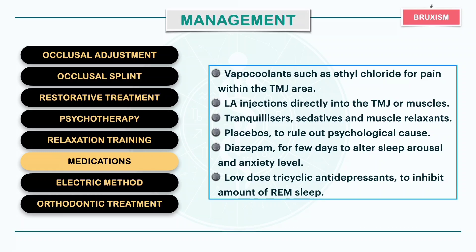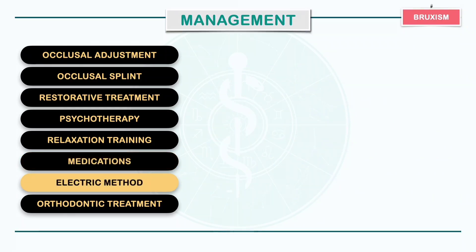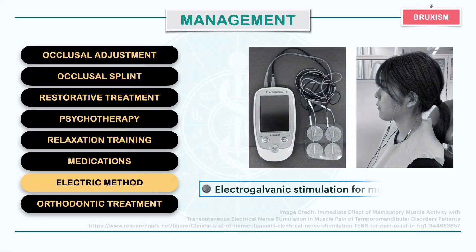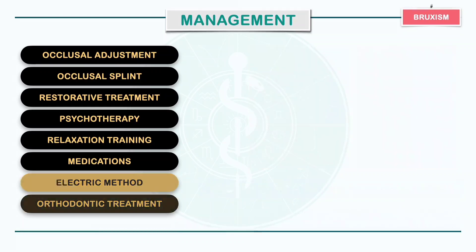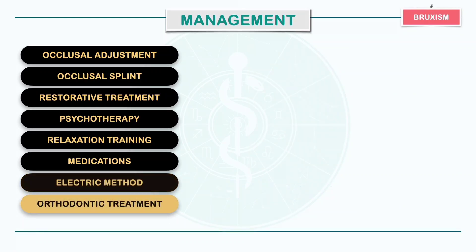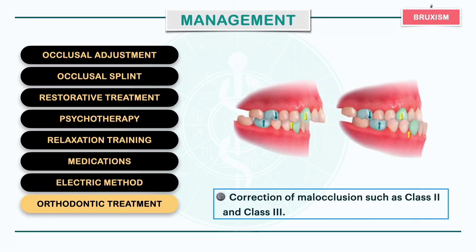The electronic method involves electrogalvanic stimulation for muscle relaxation. Orthodontic treatment involves correction of malocclusion such as class 2 and class 3 that may predispose to bruxism.